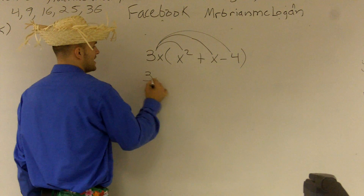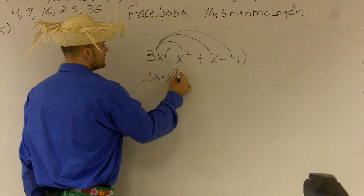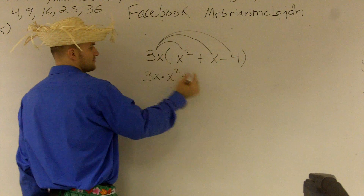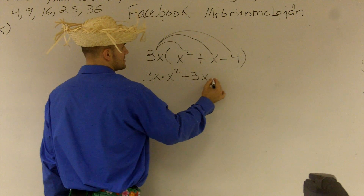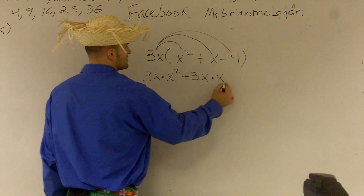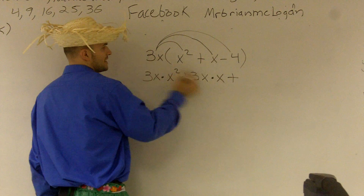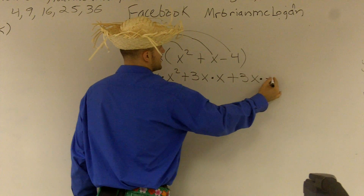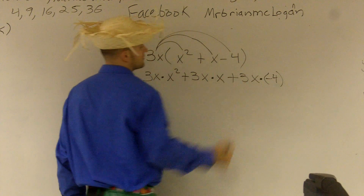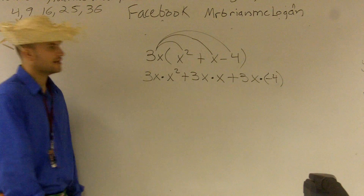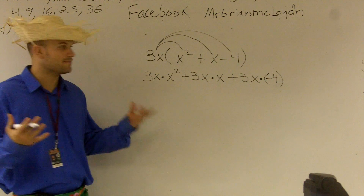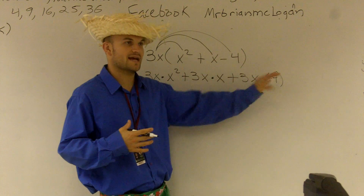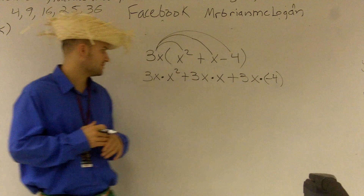So we write 3x times x squared, then that's a positive 3x times x, and another positive 3x times negative 4. I'm going to put that negative in parentheses so we remember that it's not really subtraction, but it's a negative 4 — we're not doing subtraction.